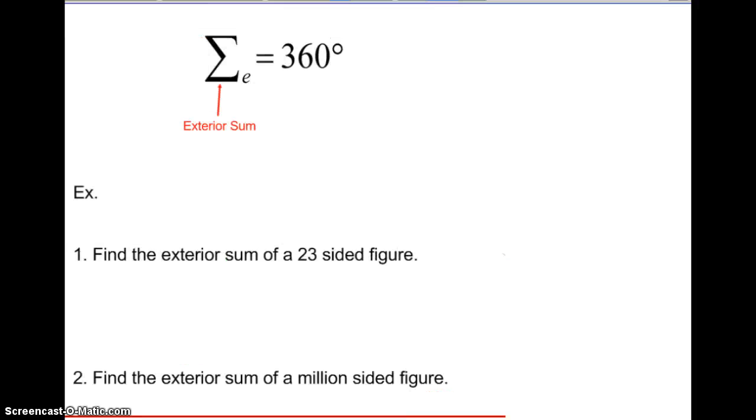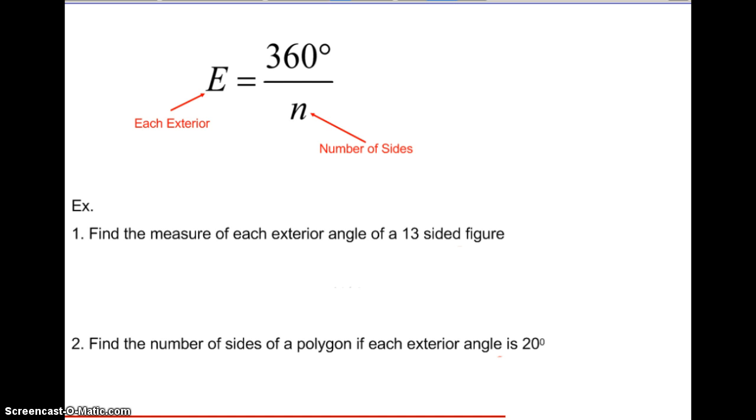Next, we have the exterior sum. And it doesn't matter if I have a 23-sided figure or a million-sided figure. The exterior sum is exactly the same. It's 360 degrees.